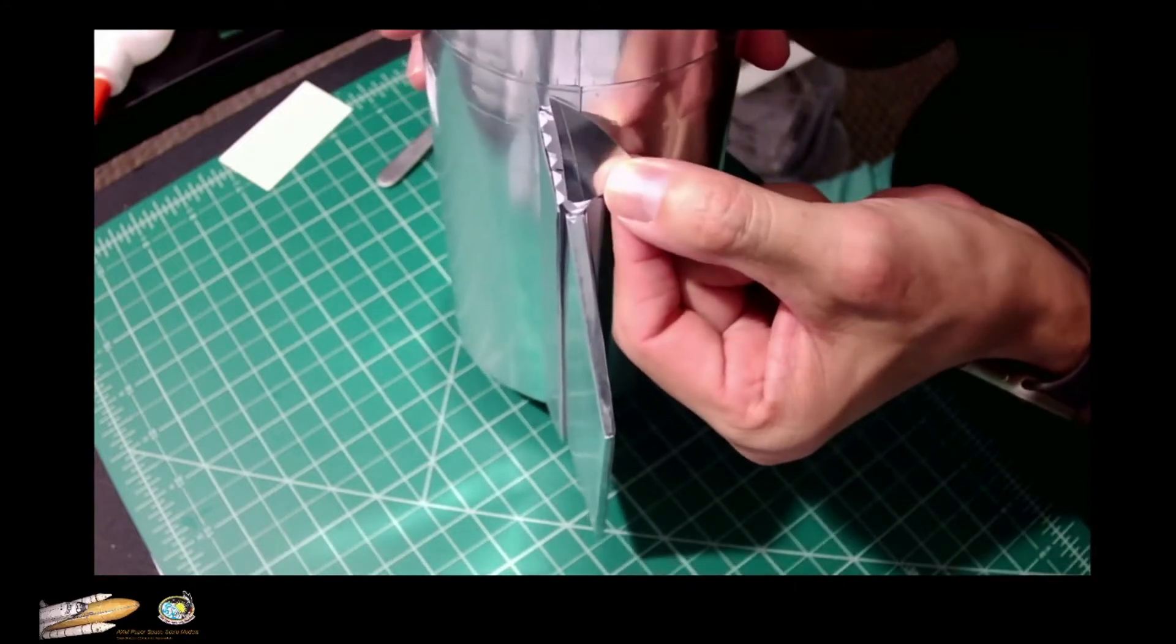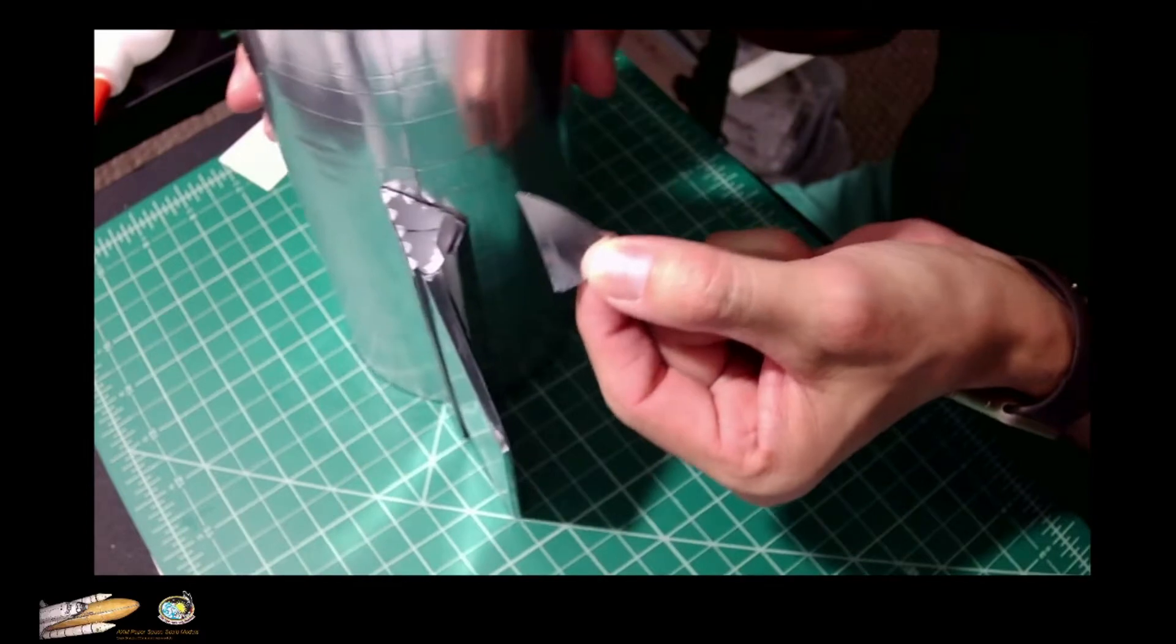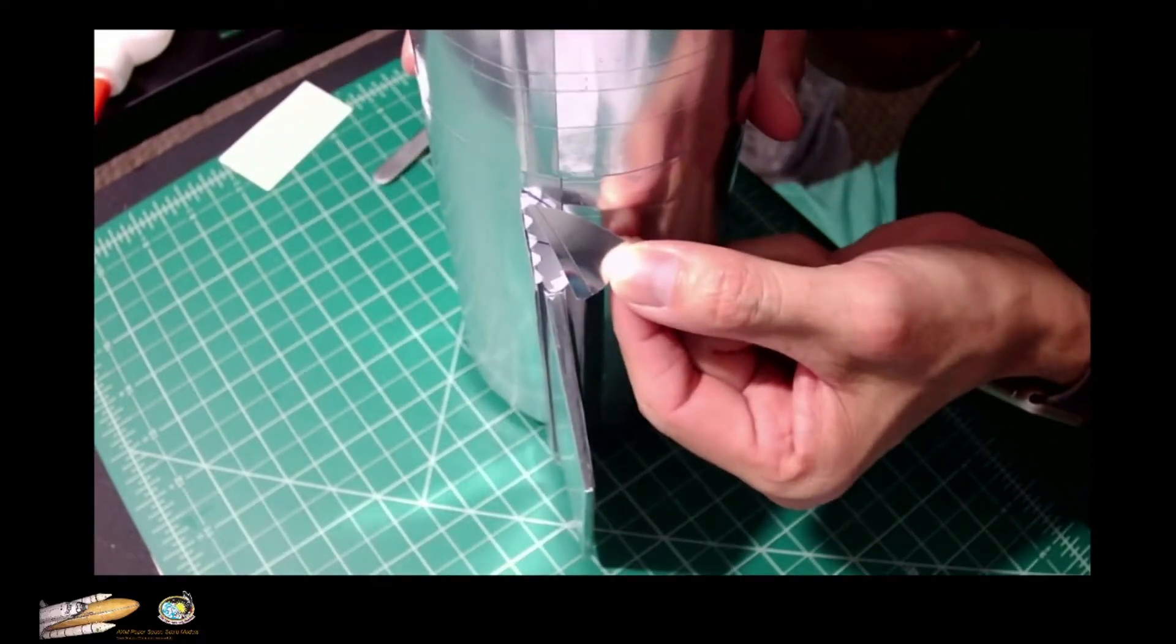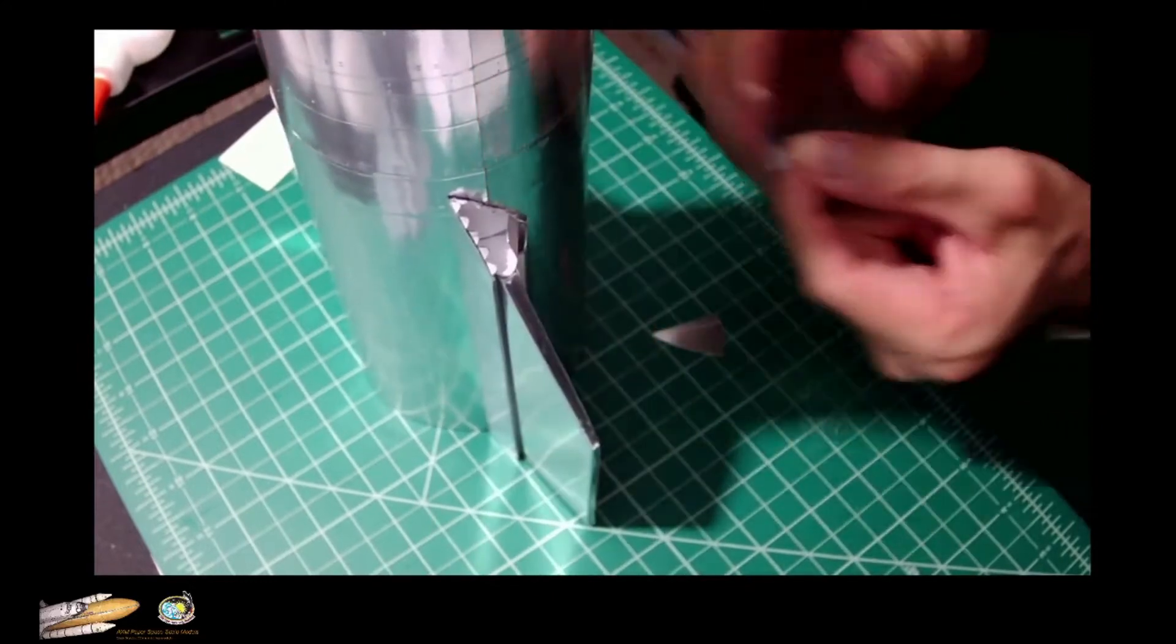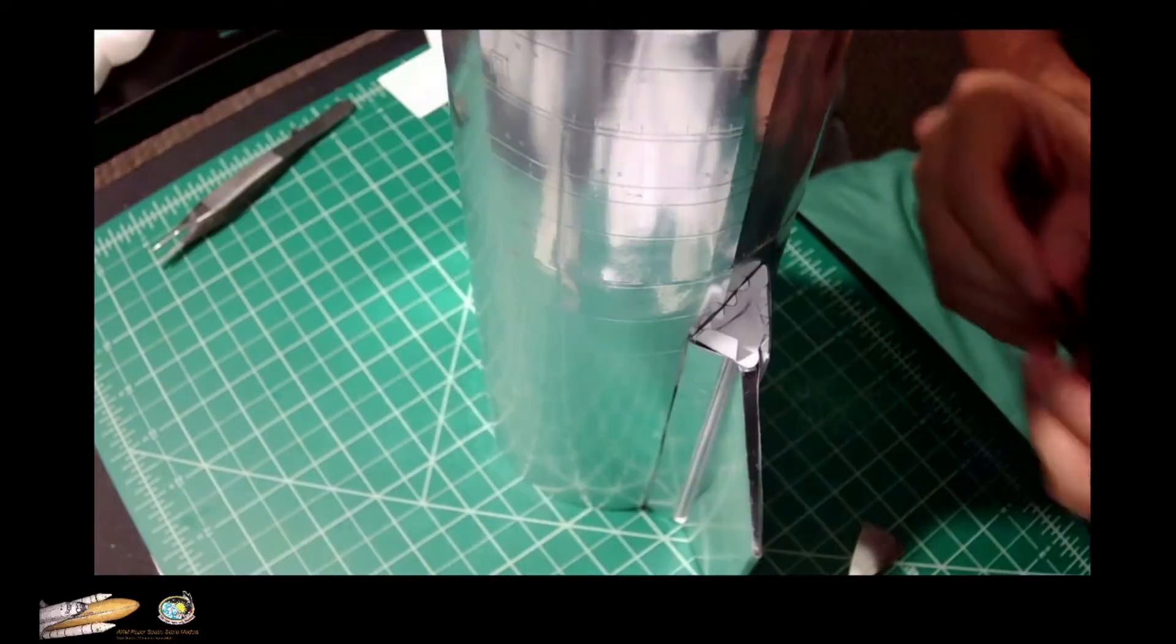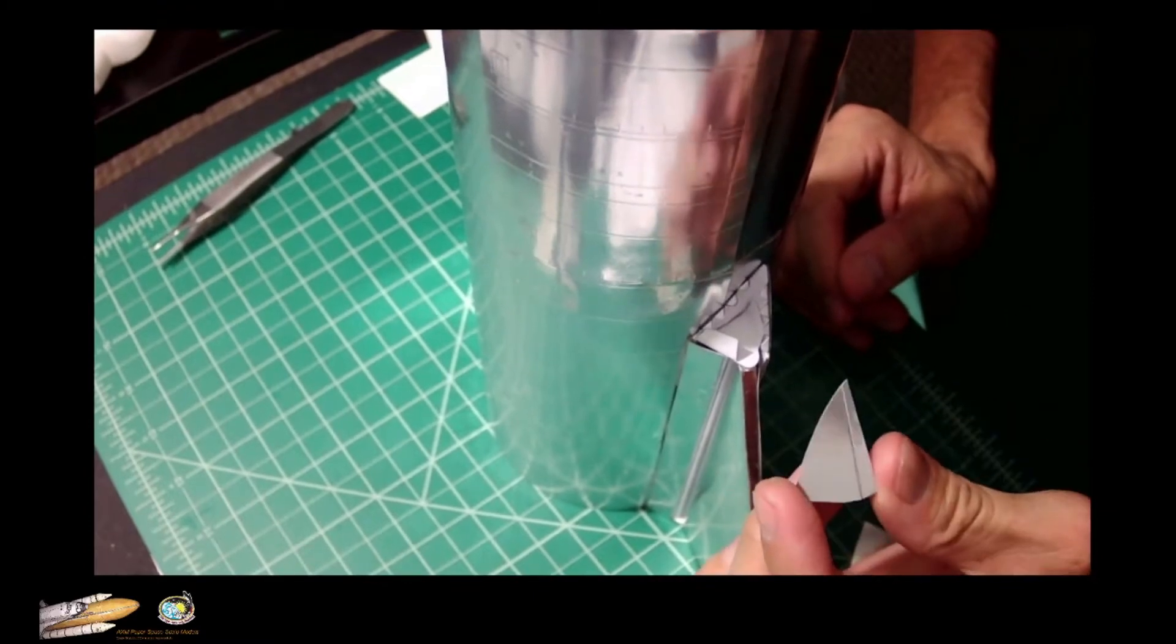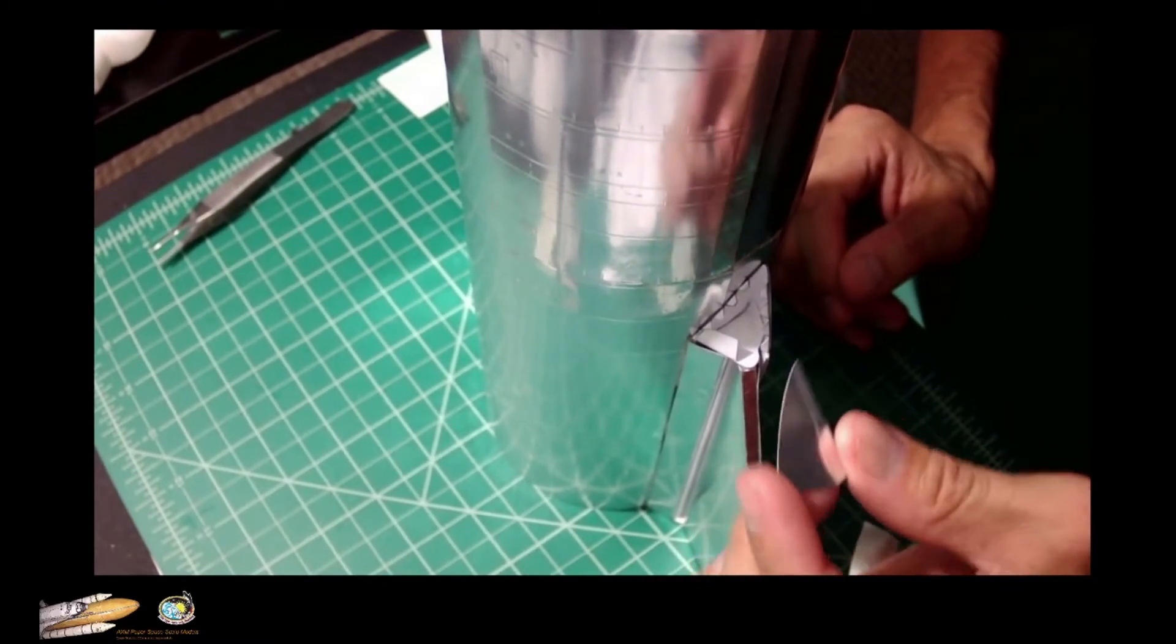We apply glue on the edges and mold it and try covering all this piece. Now we're going to apply this triangular section, the one that I showed you before.